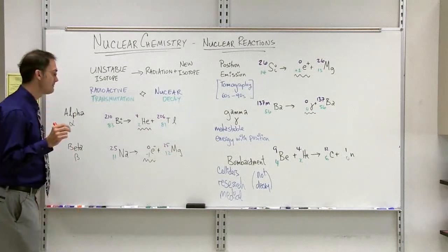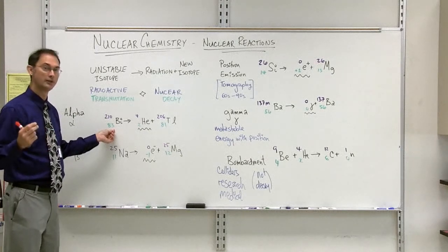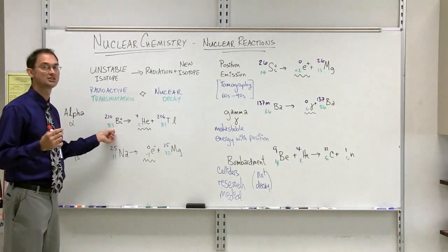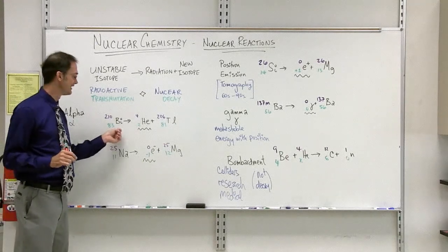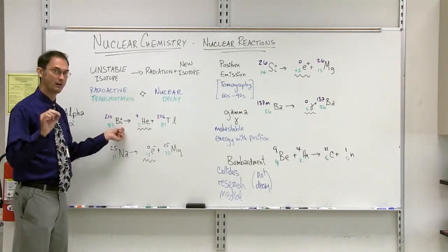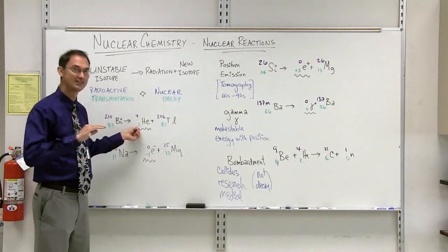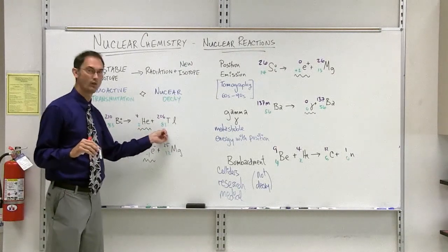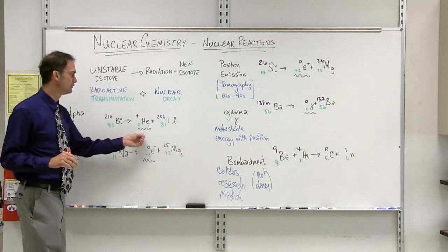At the same time, underneath, we have the atomic number, the number of protons in the nucleus. The number of protons in the nucleus tells us which element we're dealing with. If you have 83 protons, this is bismuth, and it's always bismuth. If you have 2 protons, this is helium, and it is always helium. If you have 81, it is always thallium. And you can see 83 equals 2 plus 81.